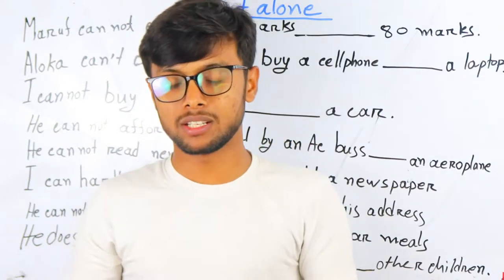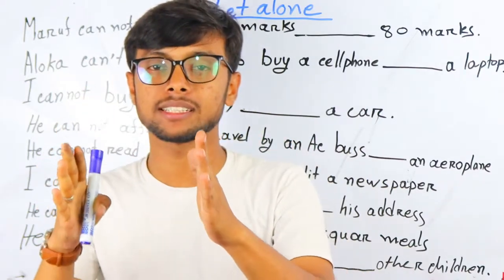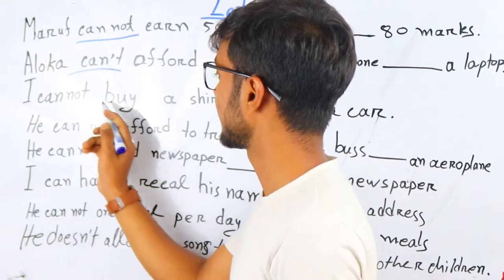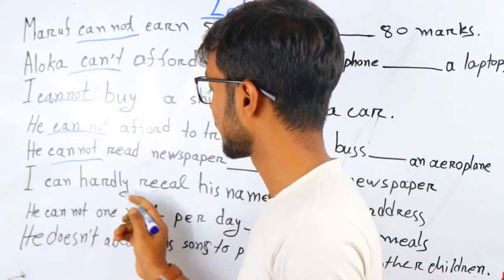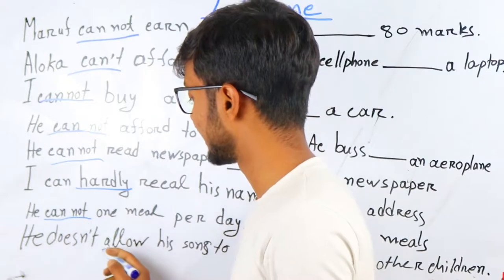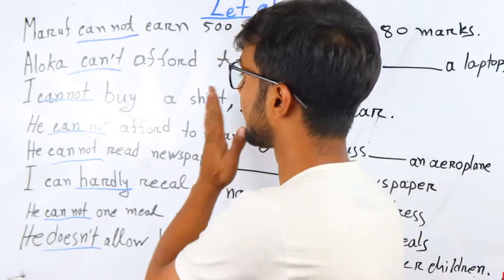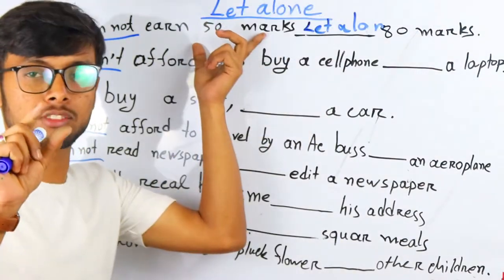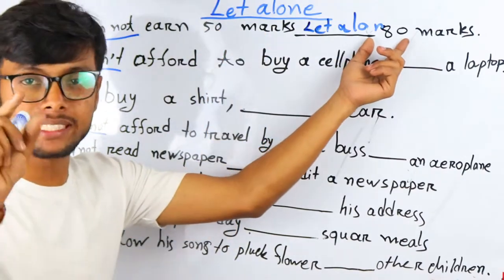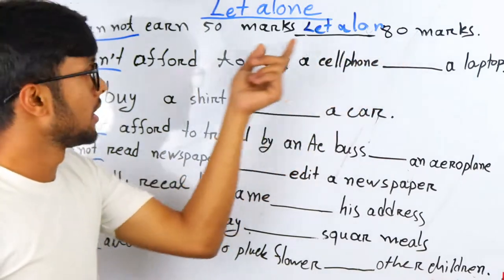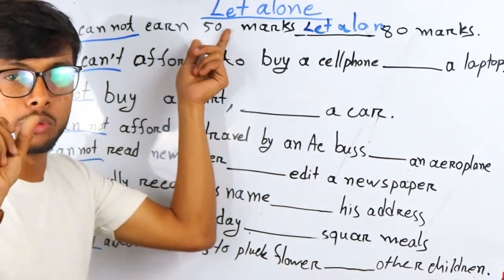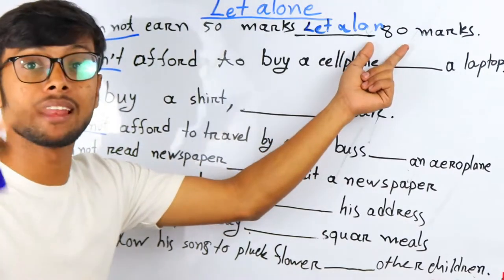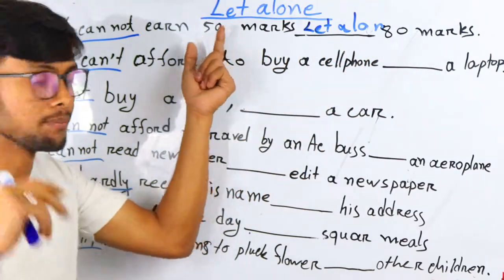There are two parts to using 'let alone.' One part contains a negative word — cannot, hardly, doesn't — making that part of the sentence fully negative. For example: 'To get 50 marks is so much easier than to get 80 marks.' You would agree — 50 marks is easy but 80 marks is very hard.